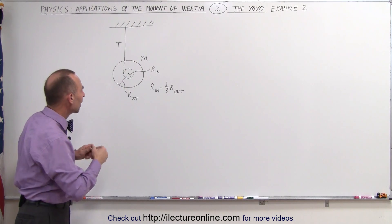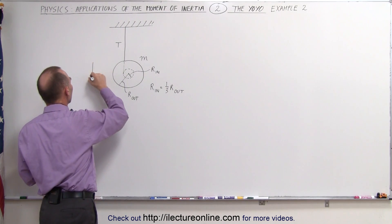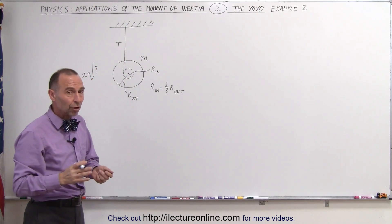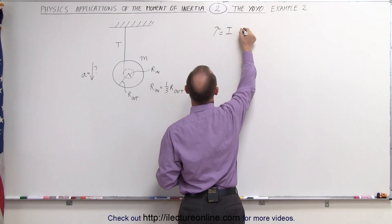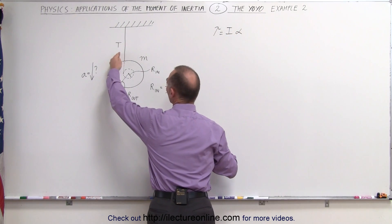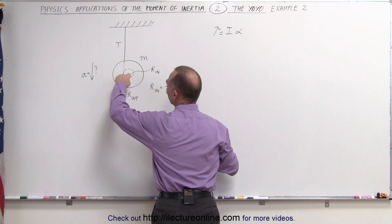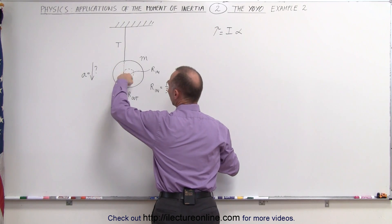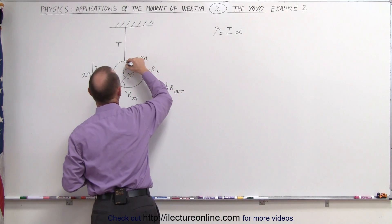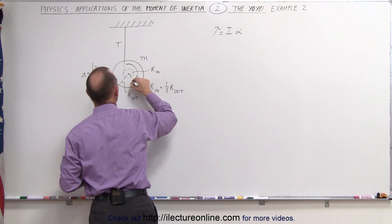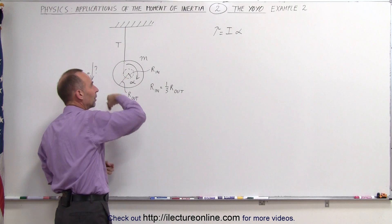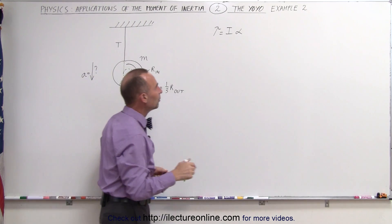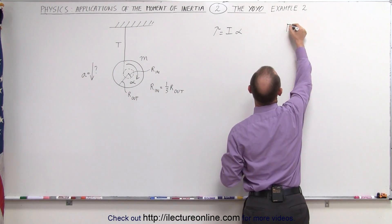Let's go ahead and figure out what the acceleration would be of a yo-yo like this. We have to solve two equations. We can say that the torque is equal to I times alpha, because the tension provides a torque about the center of the yo-yo. Secondly, we can use the equation F equals ma.